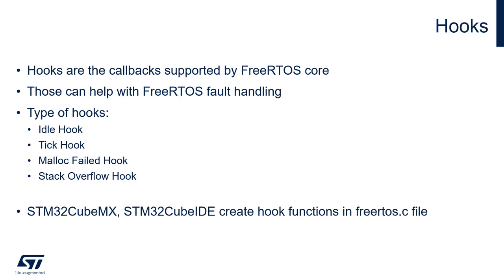Hook functions are defined within the FreeRTOS.c file with a weak attribute, so we can override them within our code without any risk of error or warning during compilation. If we want to place our code within FreeRTOS.c and use HAL functions, we need to include the proper header file. For example, for STM32L4 we need to include stm32l4xx_hal.h.